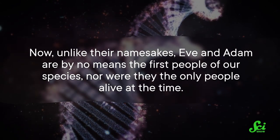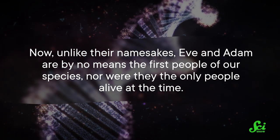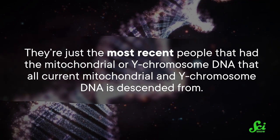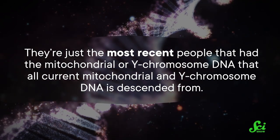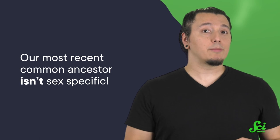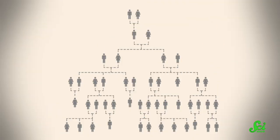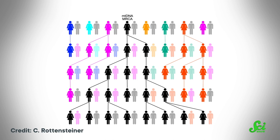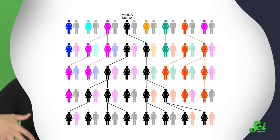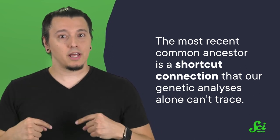Now, unlike their namesakes, Eve and Adam are by no means the first people of our species, nor were they the only people alive at the time. They're just the most recent people that had the mitochondrial or Y chromosome DNA that all current mitochondrial and Y chromosome DNA is descended from. And even though they are common ancestors to all humans, they aren't our most recent common ancestors — not by a long shot. That's because our most recent common ancestor isn't sex-specific. Someone could be related to humanity's most recent common ancestor through their mother's mother's father's mother's father, but they have to be related to mitochondrial Eve through their mother's mother's mother's mother, and so on. Basically, the most recent common ancestor is a shortcut connection that our genetic analyses alone can't trace, and there are millions of potential lineages that could connect you to the most recent common ancestor, but only one single lineage that can connect you to Eve or Adam.